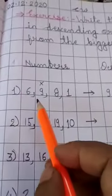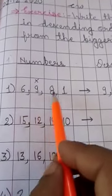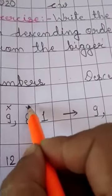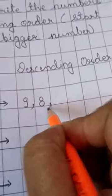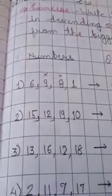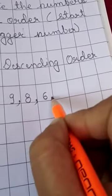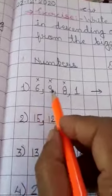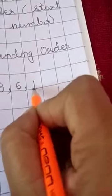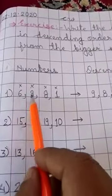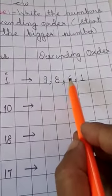Comma. Now between 6, 8, and 1, which one is bigger? Yes, 8. So cross this 8 and write 8 here. Comma. Now between 6 and 1, which one is bigger? 6. So cross this 6 and write 6 here. Comma. And last one is 1. So cross this 1 and write 1 here. So the descending order of 6, 9, 8, 1 is 9, 8, 6, 1.